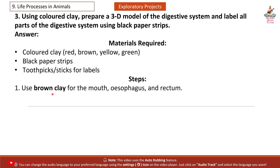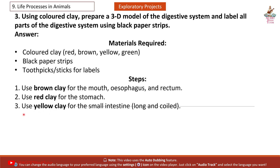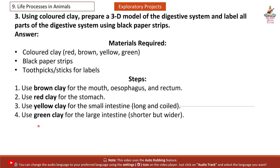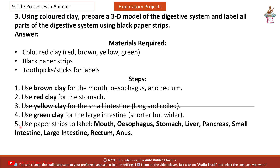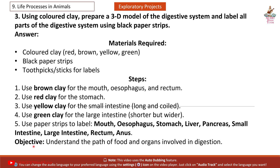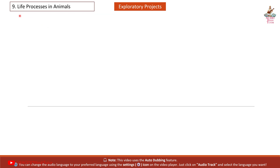Steps: First, use brown clay for the mouth, oesophagus, and rectum. Second, use red clay for the stomach. Third, use yellow clay for the small intestine — long and coiled. Fourth, use green clay for the large intestine — shorter but wider. Fifth, use paper strips to label: mouth, oesophagus, stomach, liver, pancreas, small intestine, large intestine, rectum, and anus. Objective: understand the path of food and organs involved in digestion.